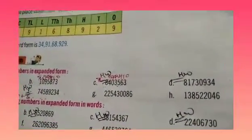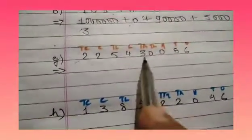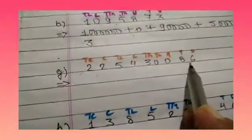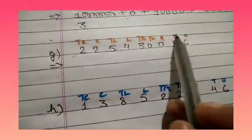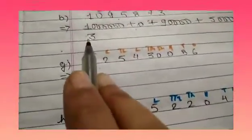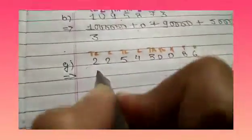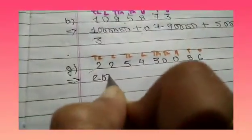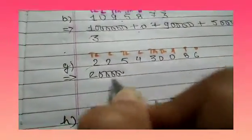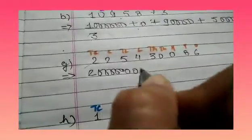G part is 2254300086. We have written the place value: 1, 10, 100, 1000, 10,000, 1 lakh, 10 lakhs, 1 crore, and 10 crores. So 2 is at the 10 crores position. How many zeros are there in 10 crores? 8. So 2 followed by 8 zeros: 1, 2, 3, 4, 5, 6, 7 and 8.